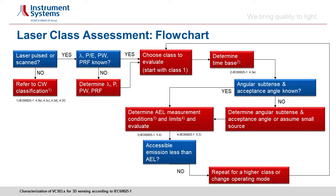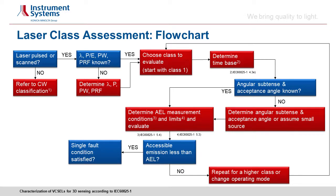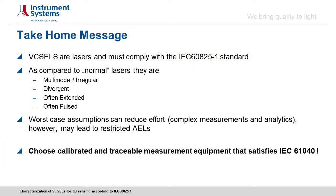Even after classification, you are not completely done. You must perform a risk assessment as the final step in the flowchart, considering any possible failure that may affect system safety. For example, a diffuser that increases divergence and reduces intensity may break. As a manufacturer, you need to identify all foreseeable fault conditions and take measures to protect the user. Once that is done, you have classified your laser.